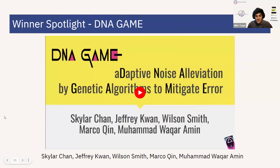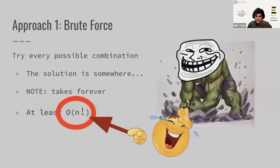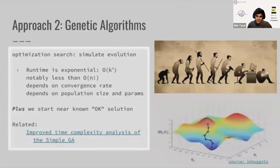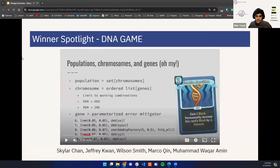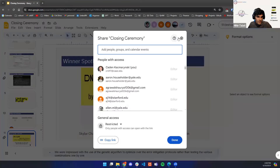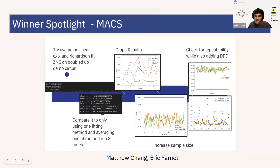On to the spotlights. The DNA game was by far one of the best submissions received, and explores how genetic algorithms can be used for quantum error mitigation. It's an optimization search scheme that simulates evolution, and it's most important because you can start with a known OK solution and use a pretty fast approach to get a better solution. The MACS spotlight involved developing a method to reduce the noisiness of data using an ANSAT circle. And those were the winners for the Unitary Fund.